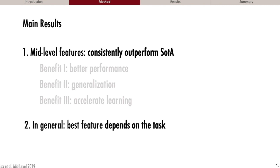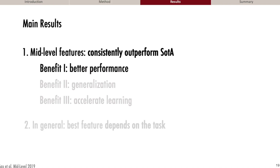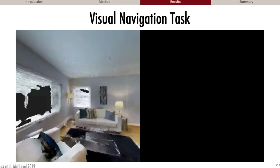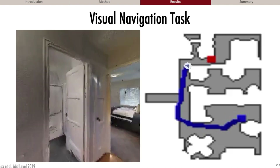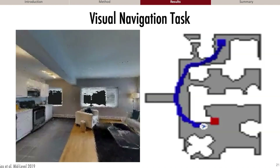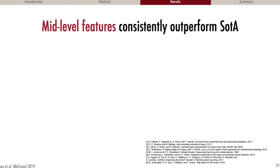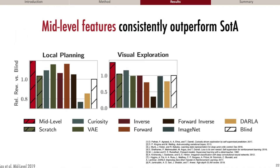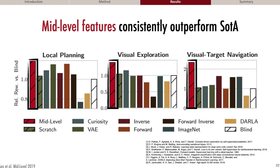I'm now going to try to convince you of two things. First, agents using mid-level features consistently outperform the state of the art. And second, in general, which feature performs best depends on the task. For test set performance, we find that for each of the tasks, agents using mid-level vision perform significantly better on the test set, outperforming alternative approaches.